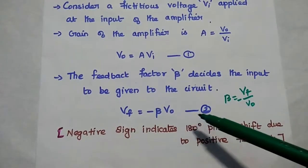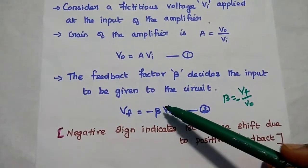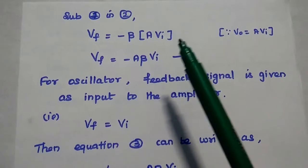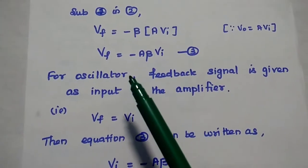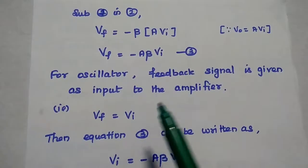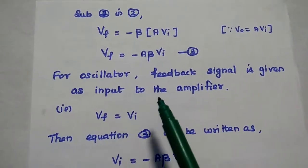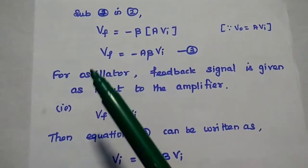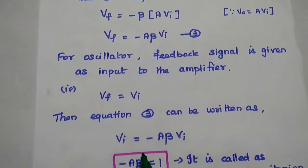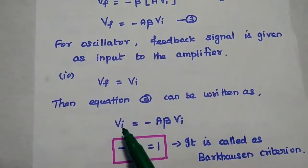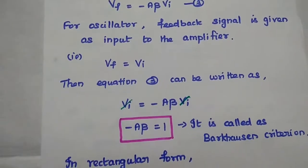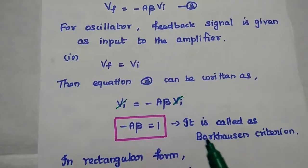Next, we substitute the first equation into the second equation. VO is replaced with A times VI, giving VF equal to minus beta times A times VI, which can be written as VF equals minus Aβ times VI. Consider that as the third equation. For oscillator circuits, the feedback signal is given as input to the amplifier, so VF equals VI. Then the third equation becomes VI equal to minus Aβ times VI. Cancelling VI, we get minus Aβ equals 1.